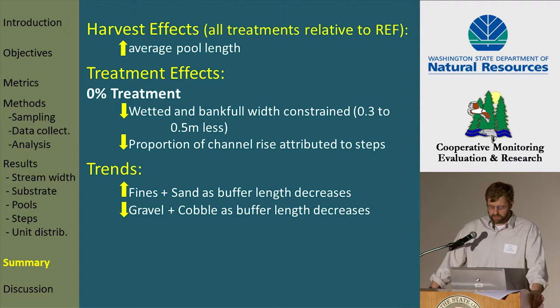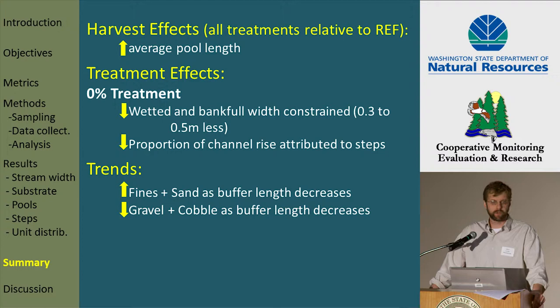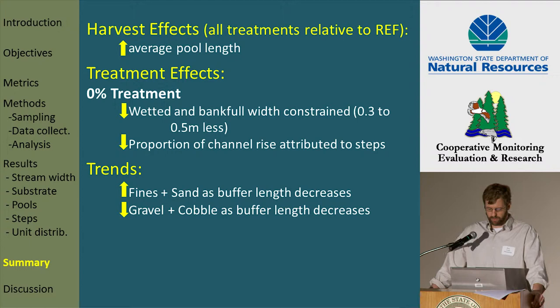To summarize: we did see an increase in average pool length in all of our treatments relative to the reference — what we're calling a harvest effect. Our treatment effects were really focused in on the 0% treatment, where we saw constrained wetted widths, decreased bankful widths, and a decrease in the proportion of the channel rise attributed to steps. The trends were that as buffer length decreases, fines and sand increase and gravel and cobble decreases.